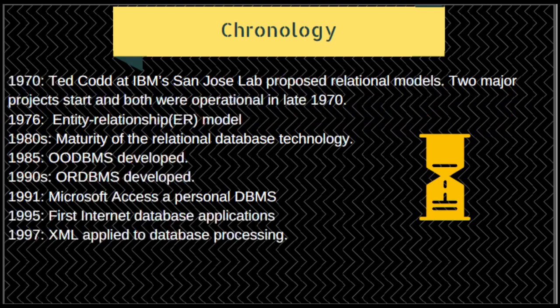Looking at the chronology: in 1970, Ted Codd at IBM's San Jose lab proposed relational models, and two major projects were started, both operational by the late 1970s. In 1976, Peter Chen defined the Entity-Relationship (ER) model. In the 1980s, relational database technology matured, more relational DBMS were developed, and SQL standards were adopted by ISO and ANSI.